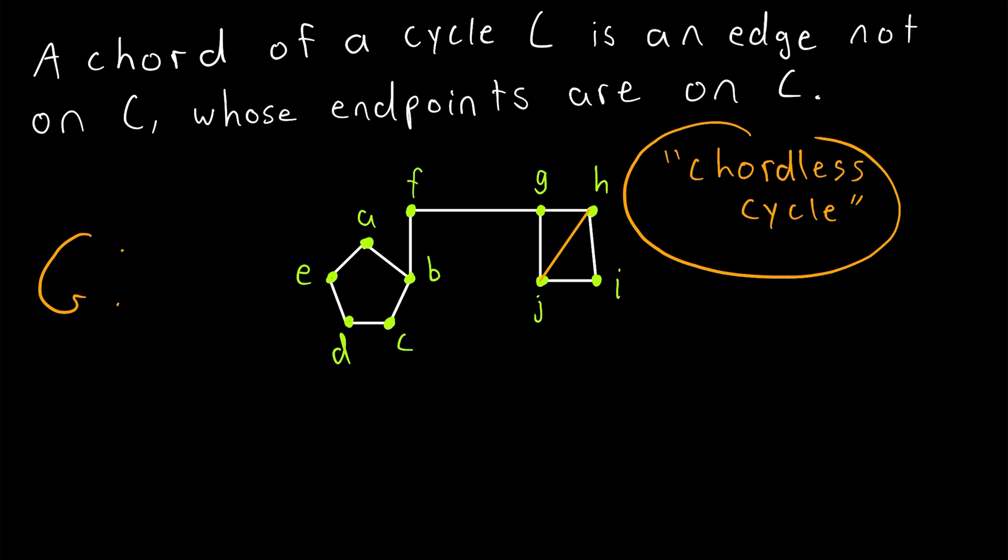So one more time, a chordless cycle, which we also sometimes call a graph hole, is a cycle of length at least four, so length greater than three. It's a cycle with length greater than three that has no chords.